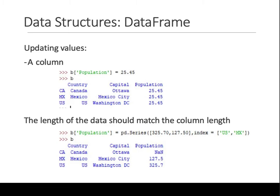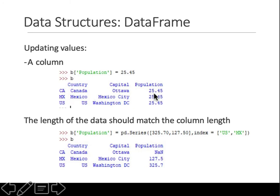The length of the data should match the column length if you want to replace everything. Otherwise NaN is written over whatever existing value there was — so if the old value was 25, it is now overwritten as NaN.